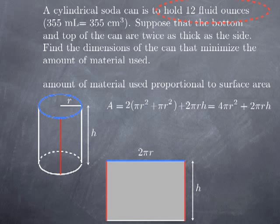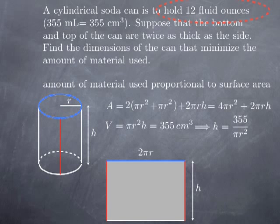The constraint is that the can must hold 355 cubic centimeters. The volume of the cylinder is the surface area of the circular base times the height, which is πr²h. So we need πr²h = 355. That gives us h in terms of r: specifically, h = 355 / (πr²).